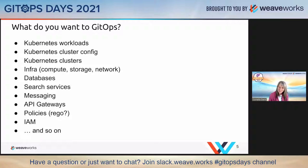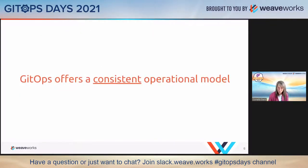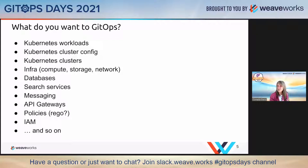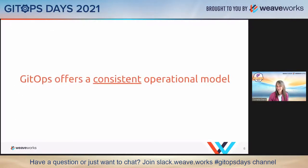What does that mean? We don't want to manage each one of these things in a different way — that is probably how you're managing your infrastructure today. Kubernetes workloads: you might be using GitOps. Cluster configuration: some other imperative infrastructure as code. Clusters: EKS. Infrastructure: Terraform. Databases, search services, messaging: some different mechanism. What we are suggesting is that GitOps can be the consistent operational model across all the things.